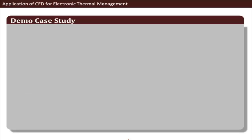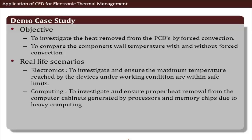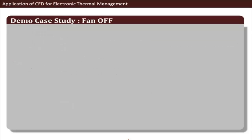We'll now see a demo case of a cabinet-level simulation done using the general-purpose code ANSYS Fluent. The objective was to investigate heat removal from PCBs by forced convection and to compare component wall temperatures with and without forced convection. Real-life applications include ensuring maximum device temperatures under working conditions stay within safe limits and ensuring proper heat removal from computer cabinets. The first case is the worst-case scenario with the fan off.